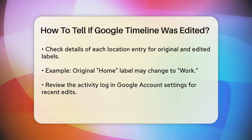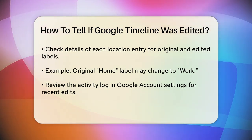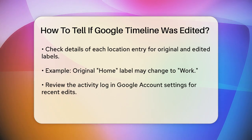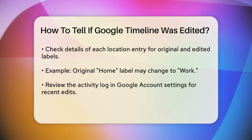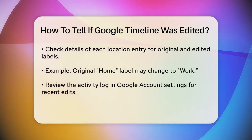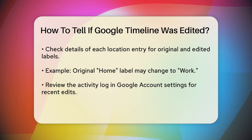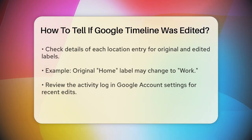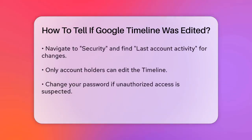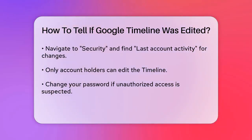Another way to check is by looking at the details of each location entry. If an entry has been edited, the original location and the edited location will be shown. For example, if a location was originally marked as home but was changed to work, you'll see both the original and the new labels.